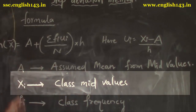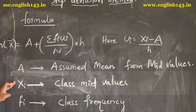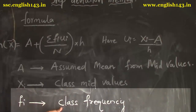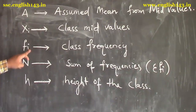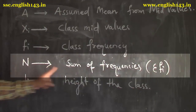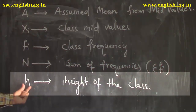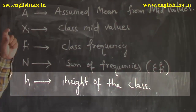We have five to six classes. xi means the mid values of the respective classes. 'fi' means the respective class frequency. For example, 30 to 40 is one class — if 12 students secured marks in 30 to 40, that 12 is the frequency. 'n' means sum of frequencies; all class frequencies we add together. n is also denoted by Σf. 'h' means the height of the class — for example, 10 to 20 and 20 to 30, the difference is 10, so h = 10.